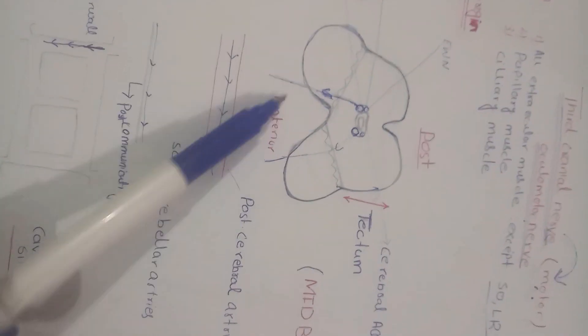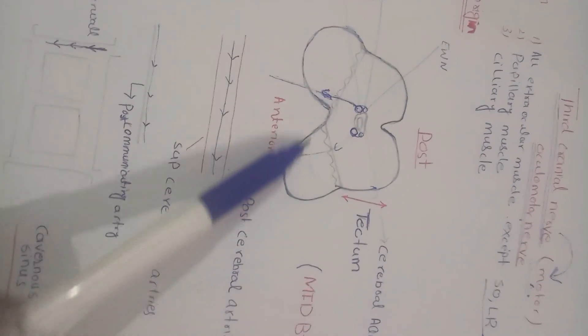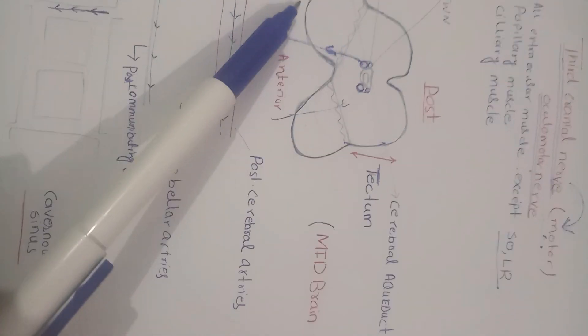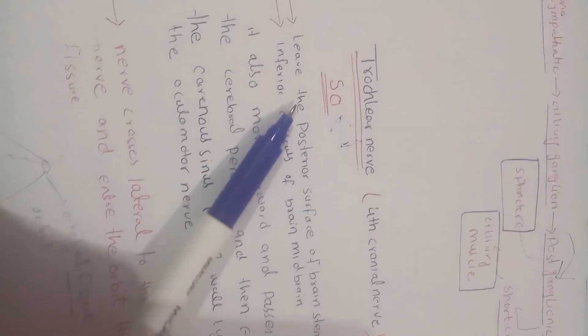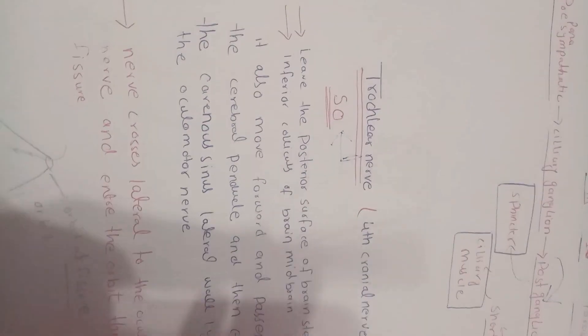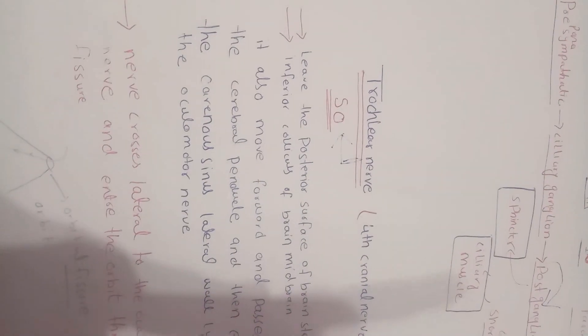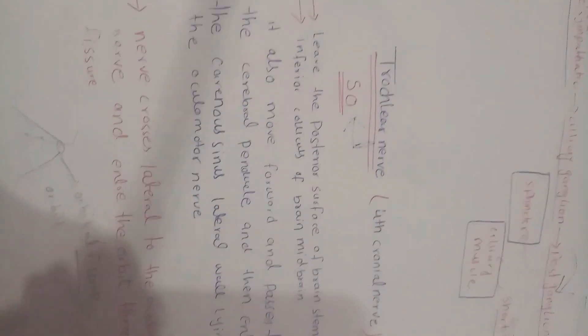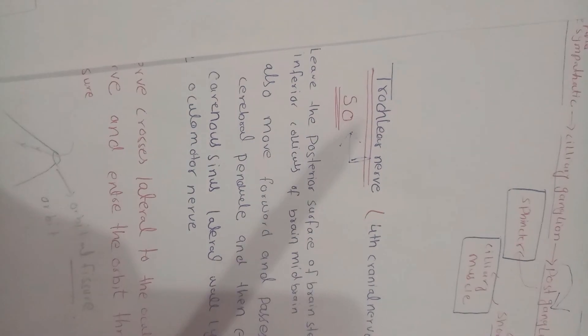It originates from the midbrain at the level of the inferior colliculus and leaves the posterior surface of the brainstem. It then moves forward and passes through the cerebral peduncle.